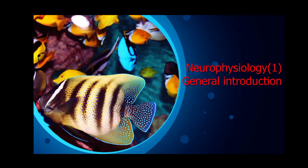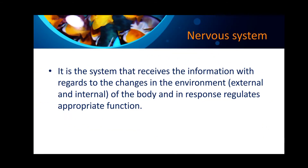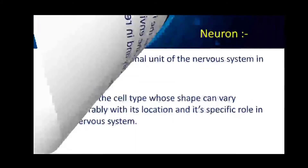Neurology is the most important and interesting topic in both Veterinary Physiology and Veterinary Anatomy. The nervous system is a system that receives information with regard to changes in the environment — the environment may be external or internal to the body — and in response, regulates appropriate function.